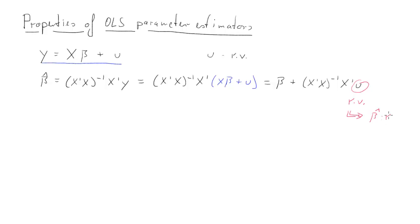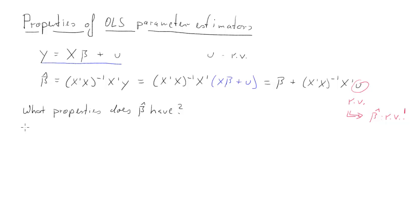That is the first absolutely crucial insight. What we're going to do in this clip is essentially ask: what properties does this new random variable beta hat have? That is the topic of this clip, and it turns out the answer depends on the assumptions we are willing to impose, mostly on our error terms.